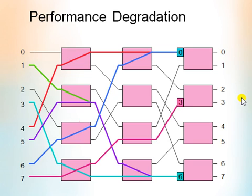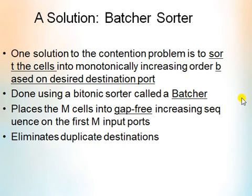So to overcome these problems a solution has been introduced. Its name is batcher sorter which is done using a batcher. It is also known as bitonic sorter. Here there are 2 steps. In the first step it places M cells into gap-free increasing significance of the first M input spots. In the next step it eliminates the duplicate destinations.